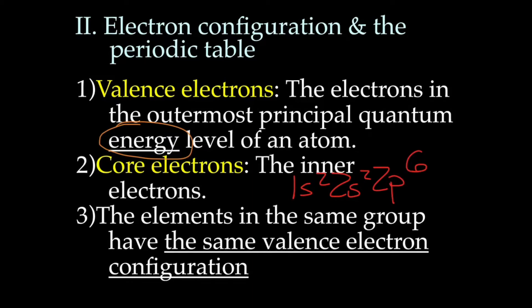The valence electrons are the electrons in the outermost principal quantum energy level. Remember, energy levels are represented by numbers. So those are the valence electrons. Those are the core electrons.